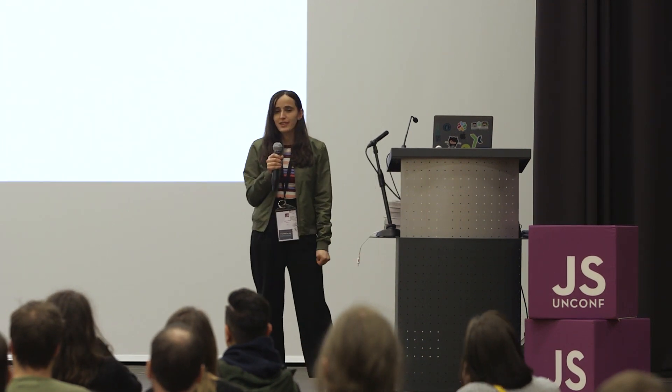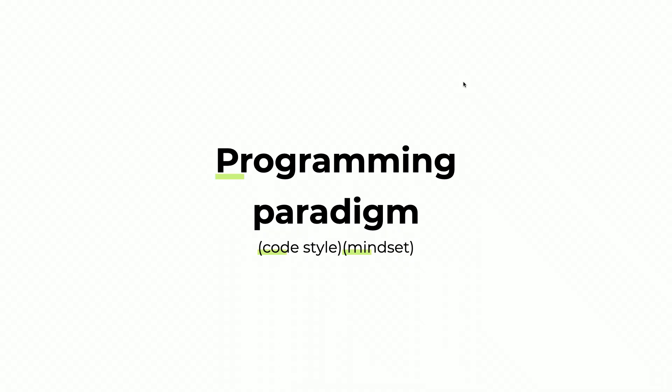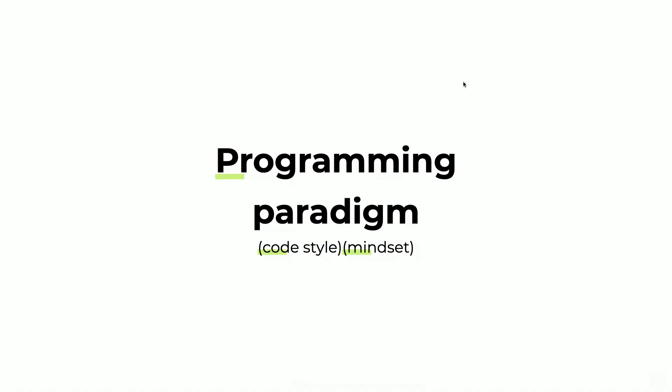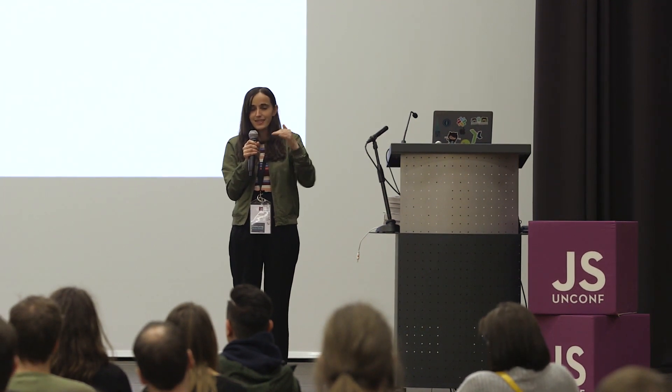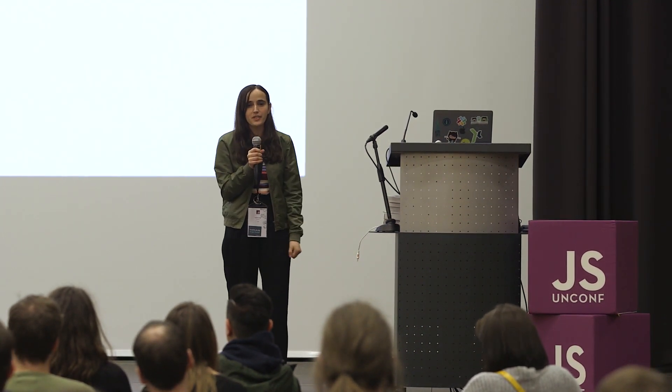Functional programming is a programming paradigm. A paradigm, for me, is kind of a worldview — a way how we look at the world in terms of how the world is composed: what elements it contains and how those elements interact with each other. So if we say what is functional programming, I would say it's a code style — we look at what elements it contains and how those elements interact with each other.